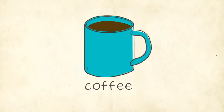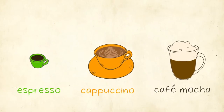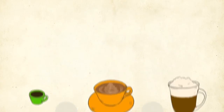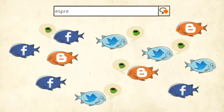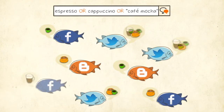The first operator we'll look at is OR, which allows us to expand our search. Keep in mind that you always have to capitalize operators in order for the search to work correctly. Suppose we're interested in different types of coffee, such as espresso, cappuccino, or cafe mocha. To have any of these three appear within our results, we simply insert the OR operator between them. Adding OR to our search allows us to return even more results from our sea of conversations. Remember, we use OR to expand our search results.